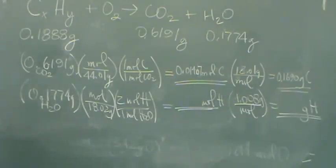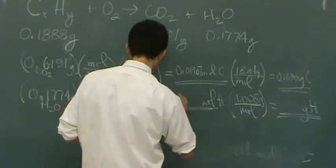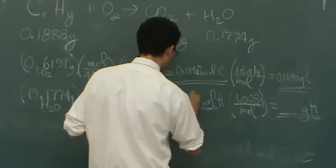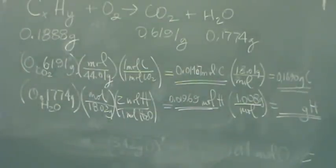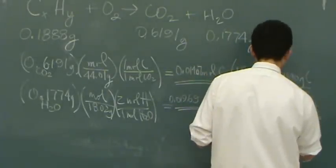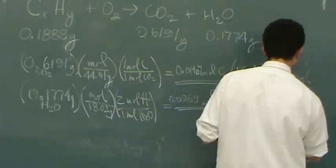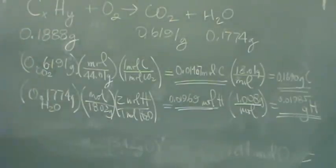Now for the next one, we're going to do the same thing with water. 0.1774 times, or divided by 18.02 times 2. So I got 0.01969, is that okay? Times 1.08, and I get almost the same number. 0.01985. So I've got the mass in moles of both.